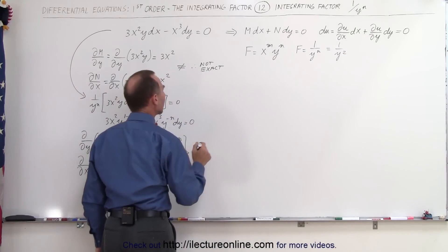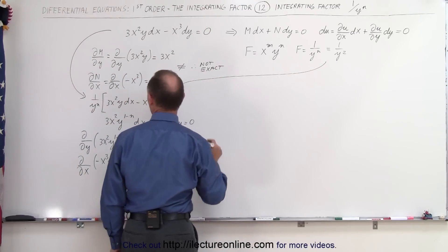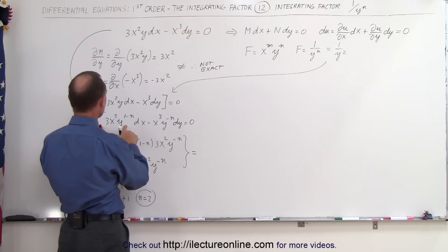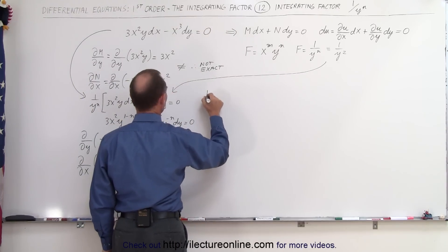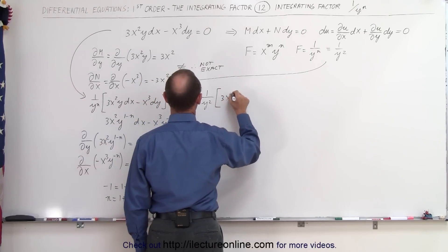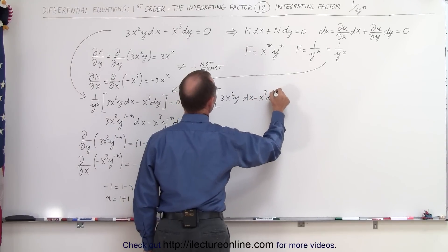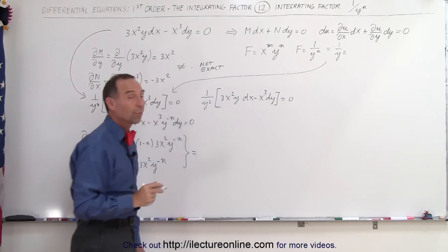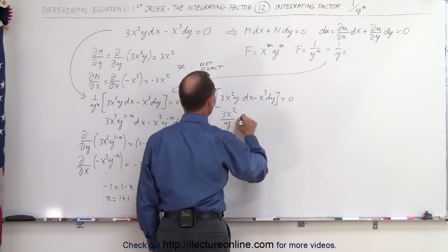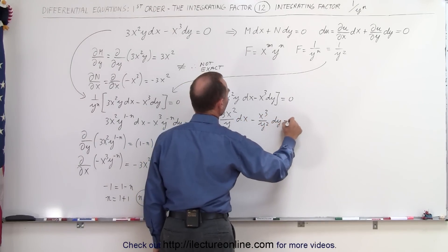Therefore the integrating factor is 1 over y². Applying it to our equation: 1 over y² times (3x² y dx minus x³ dy) equals 0. Multiplying through, we get 3x² over y dx minus x³ over y² dy equals 0.